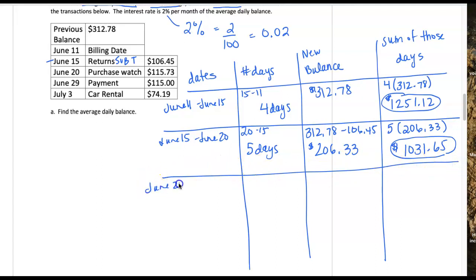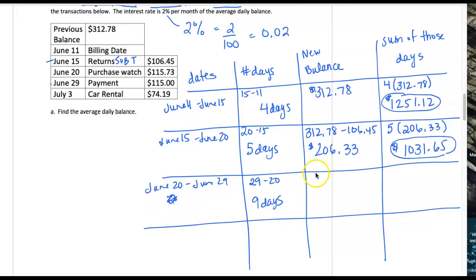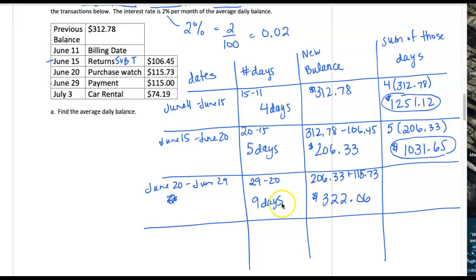The next row starts on June 20th and goes to June 29th — that's 29 minus 20, nine days in this category. We had a balance of $206.33, and on June 20th we purchased a watch, so we add $115.73 to our balance. Adding those two together I get $322.06 as the new balance of the credit card for those nine days. The total for those nine days is $2,898.54.